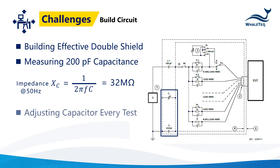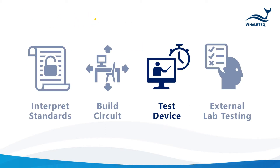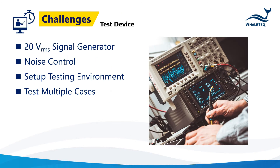Challenge 3: The stray capacitor will need to be adjusted every test due to the sensitivity to the testing environment. Finally, once you get your circuit calibrated, you're ready to test. Per the standard, you need to find a signal generator that can provide a voltage of up to 20 volts RMS without causing significant noise.